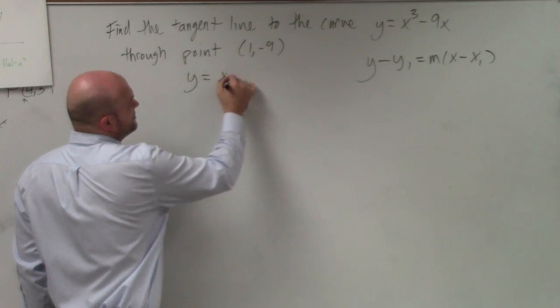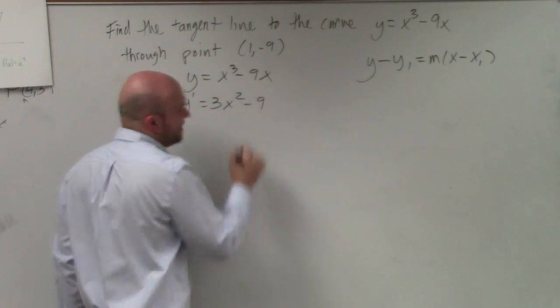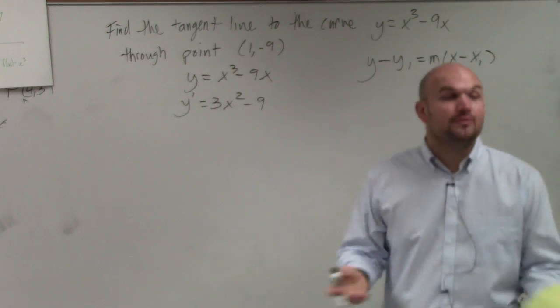So y = x³ - 9x. Therefore, y' = 3x² - 9. That's the best example we have of our slope.